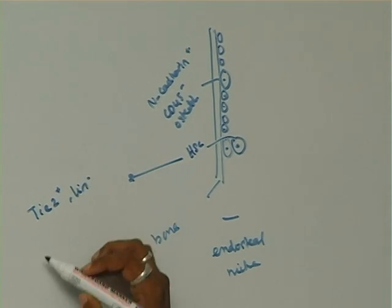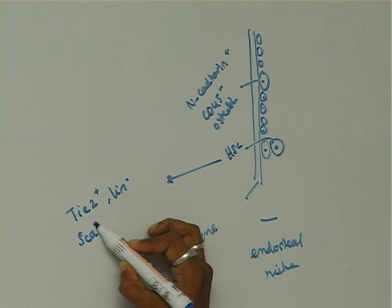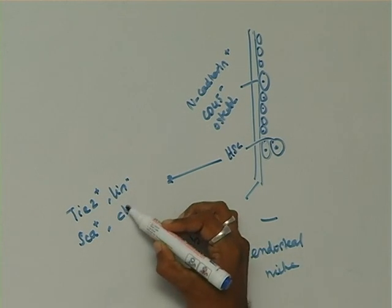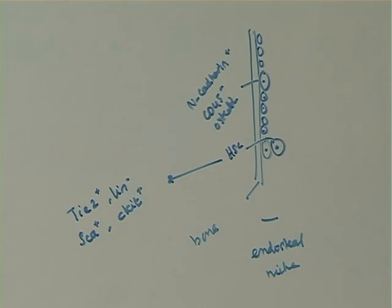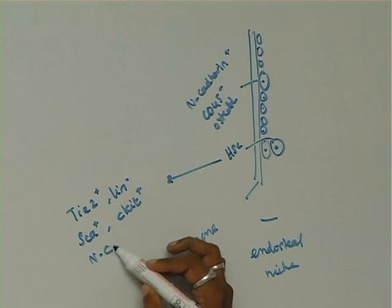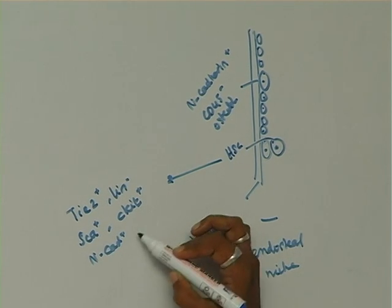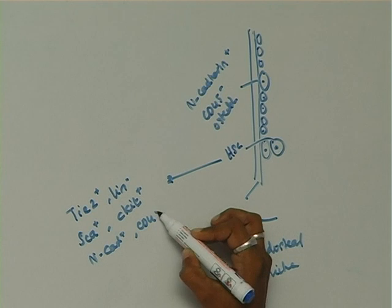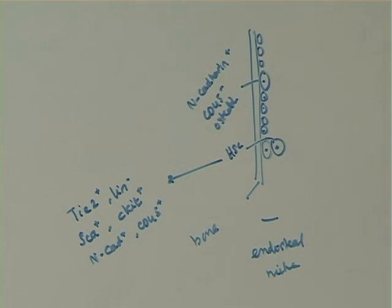lineage negative, stem cell antigen positive, c-kit stem cell antigen receptor positive, N-cadherin positive, and also CD45 positive. These are the markers used for hematopoietic stem cells.